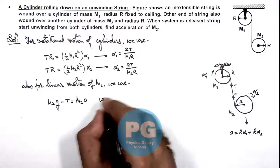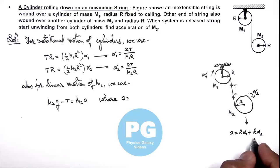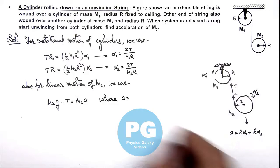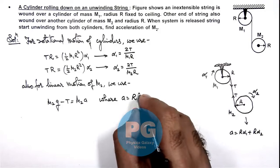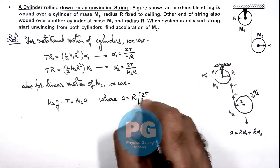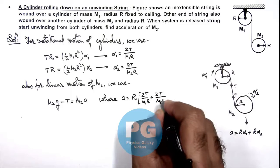Where the value of a is equal to R alpha 1 plus R alpha 2, so this will be R multiplied by alpha 1 plus alpha 2, which can be written as 2T by m1 R plus 2T by m2 R.